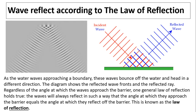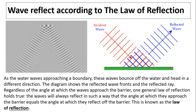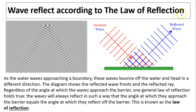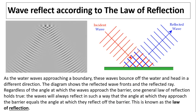The diagram shows reflected wavefronts and reflected ray. Regardless of the angle at which the waves approach the barrier, one general law of reflection holds true. The waves will always reflect in such a way that the angle at which they approach the barrier equals the angle at which they reflect off the barrier. It's symmetrical — if you have an imaginary line right in the middle, the two angles are the same. This is called the law of reflection. We're going to talk about the law of reflection next chapter in detail.